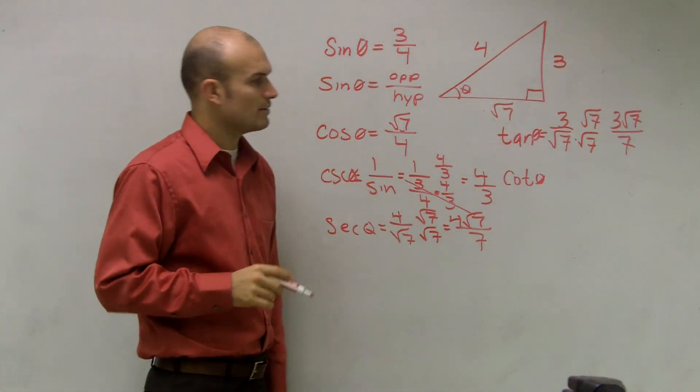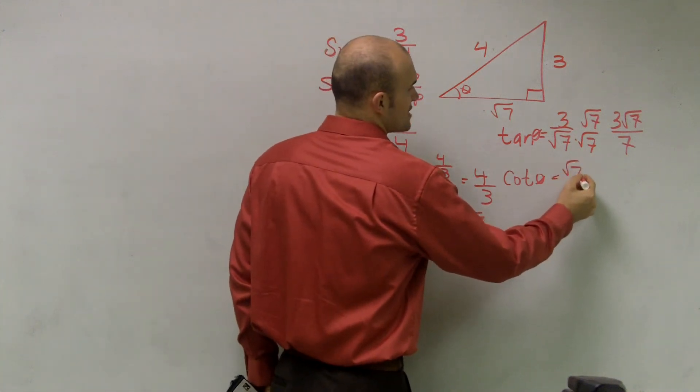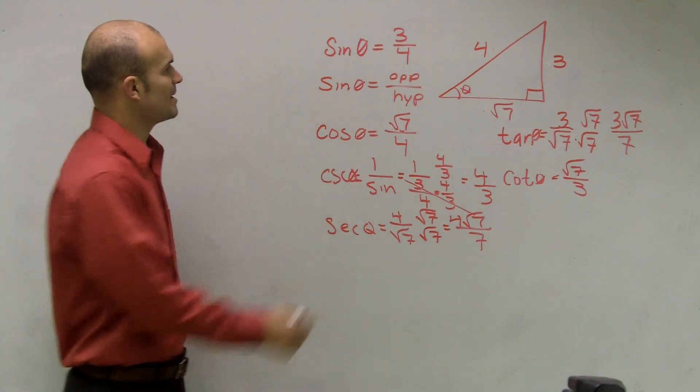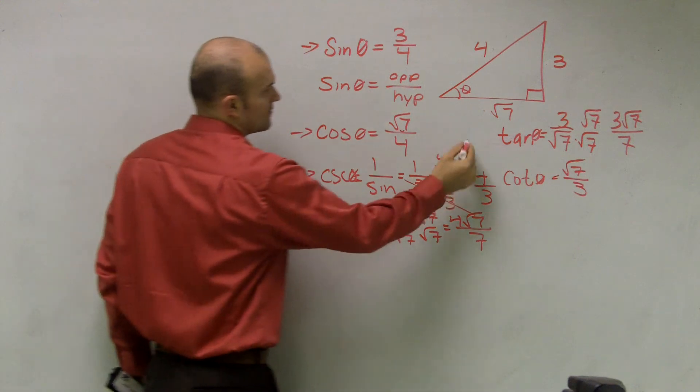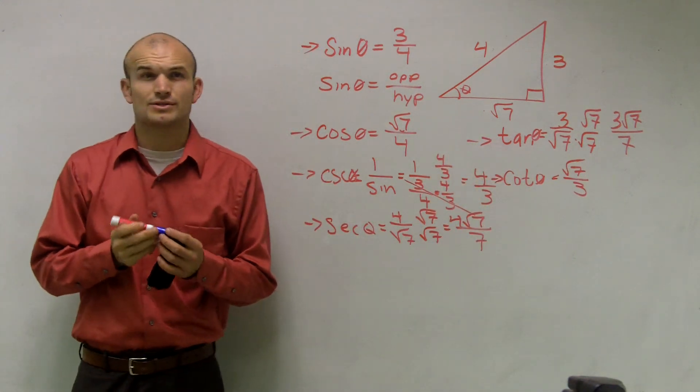Make sure what we're evaluating for, that angle. So that's going to be radical seven over three. So therefore, I have now evaluated for my six trig functions. Anybody have any questions on that?